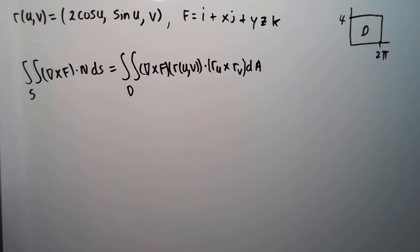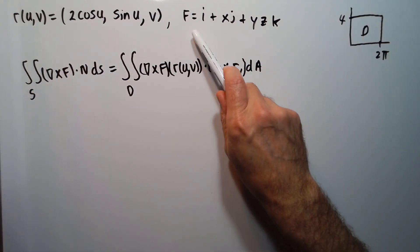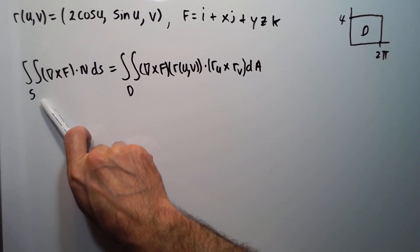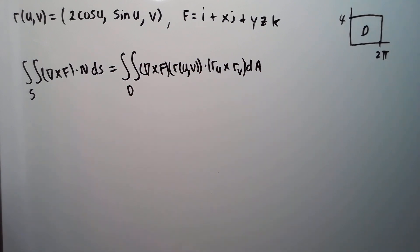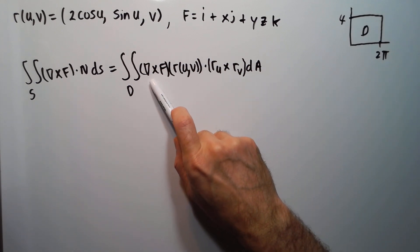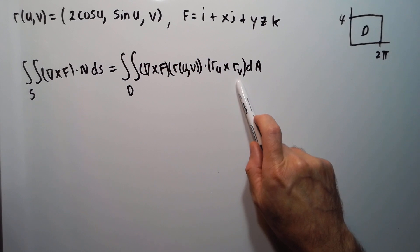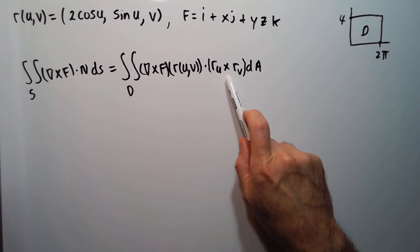Summarizing: we have our parametrization, we have our f, and we have our domain region d. We're trying to find this double integral. To figure this out, we need to find the curl of f and also r_u cross r_v. Let's start working on r_u cross r_v.